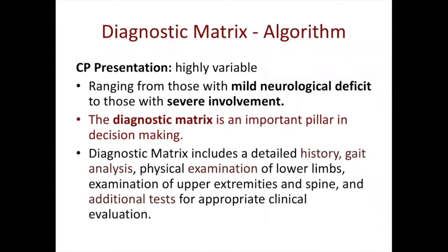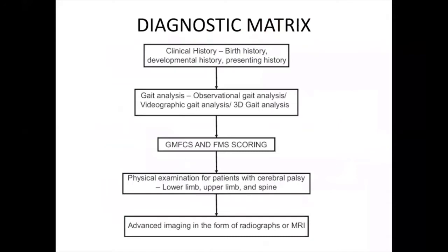This diagnostic matrix basically includes history, gait analysis, physical examination of upper and lower limbs, spine, and certain additional tests to reach the definite diagnosis and treatment program for the child's disability and motor function.